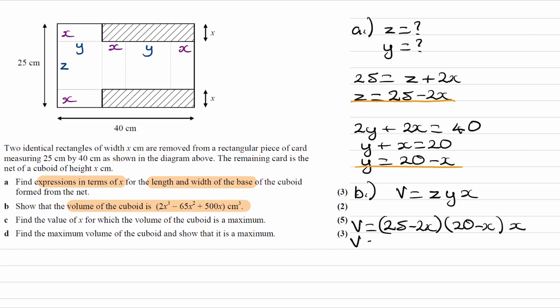Expand out the two brackets, and we end up with 2x squared minus 25x minus 40x, which is minus 65x, plus 500, all times x. And then when we expand this out, we end up with our answer.